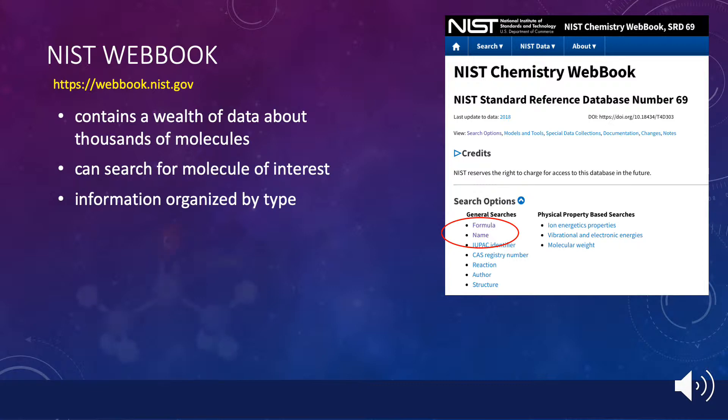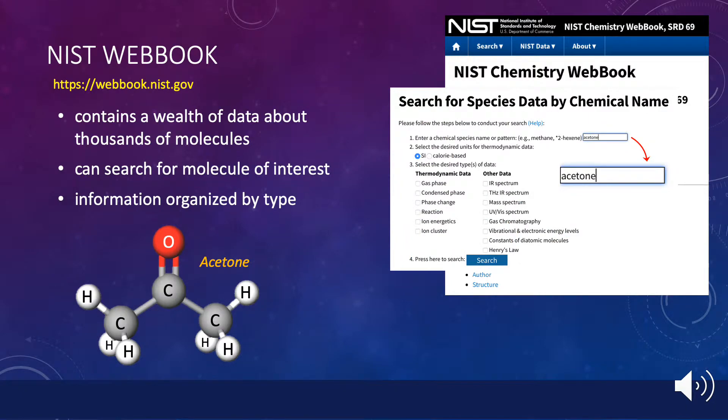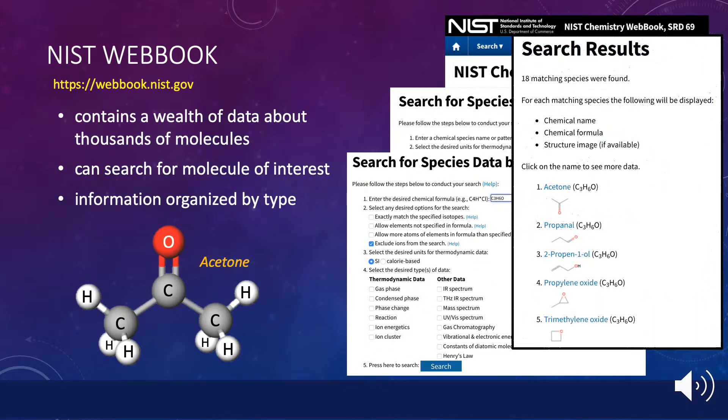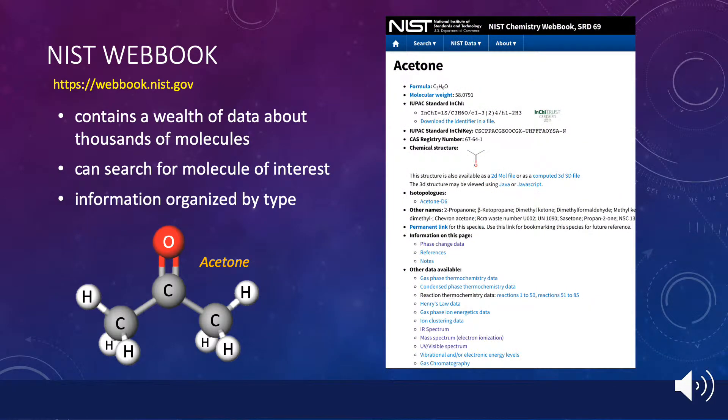For example, if we wanted to learn more about the molecule acetone, we could search under its name or under its formula. The latter would produce search results that would include all the isomers having the same formula. Either choice would ultimately lead to the summary page for acetone. Once here, we will access the information needed for this assignment by choosing one of these possibilities: phase change data, IR spectrum, or mass spectrum.